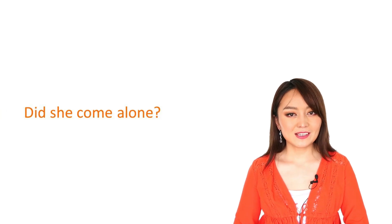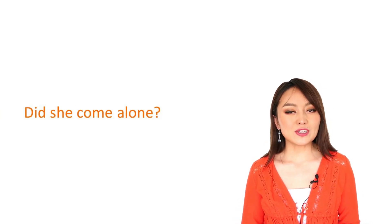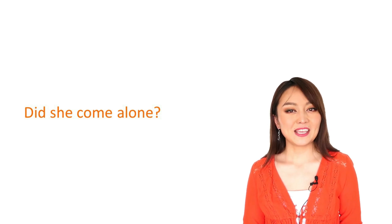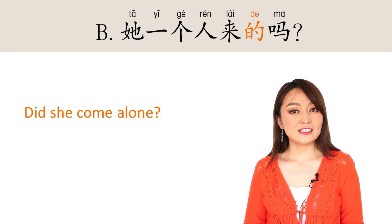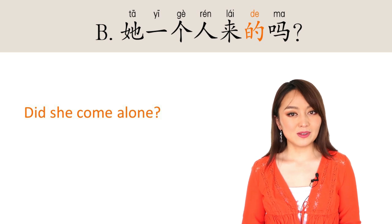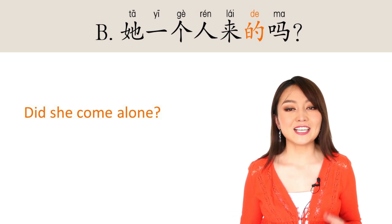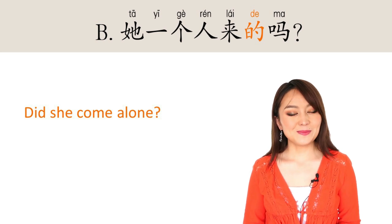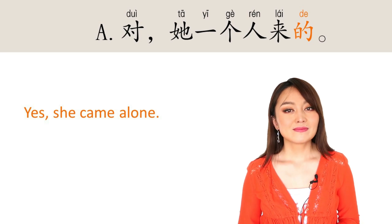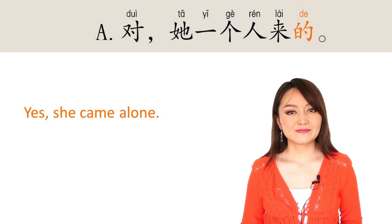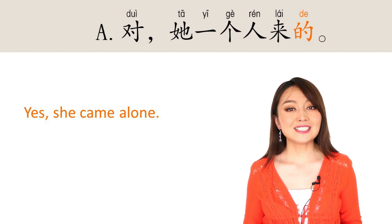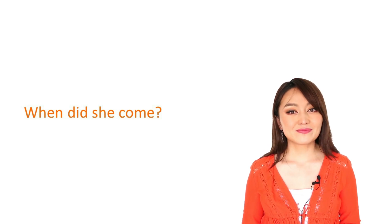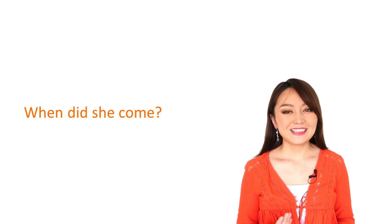我妈来看我了. Now think — what should B say if they want to ask: did she come alone? Right, it should be 她一个人来的吗? We use 得 because it's a further conversation about more details. And A answers: 对,她一个人来的 — yes, she came alone. Now tell me, what should B say if they want to ask: when did she come?